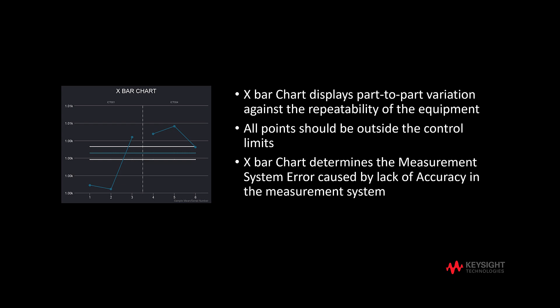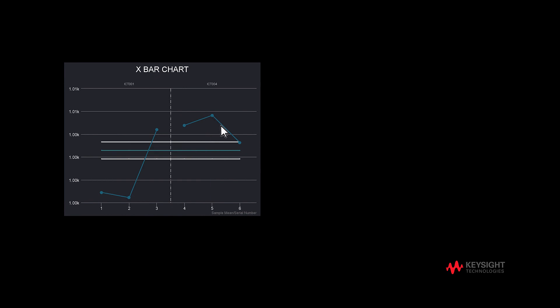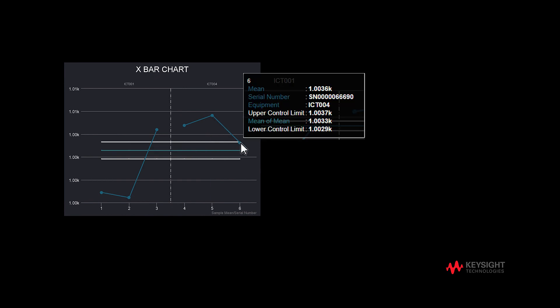The X-bar chart determines the measurement system error caused by lack of accuracy in the measurement system. Mouse over each point in the X-bar chart to see several statistical items displayed.